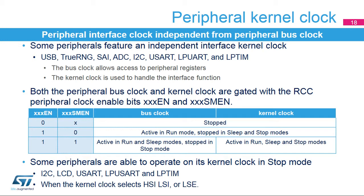For example, the USART kernel clock is used to generate the baud rate for the serial interface communication, and the bus clock for the register interface. The enabling of both the peripheral bus clock and kernel clock is controlled by the reset and clock controller's peripheral enable and sleep mode enable bits. When both bits are set to 1, the peripheral is able to operate and transfer data in sleep mode. When HSI, LSI, or LSE is selected as the kernel clock, the peripheral is able to operate and wake up the system from stop mode. In stop mode, the peripheral is not able to transfer data on the bus matrix, for example, to memory.